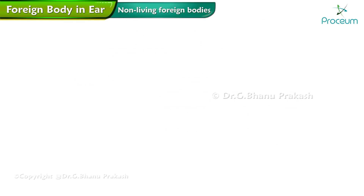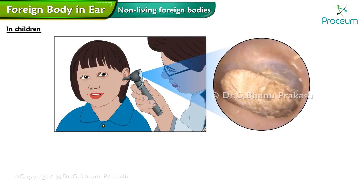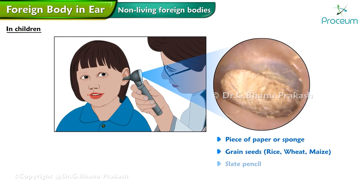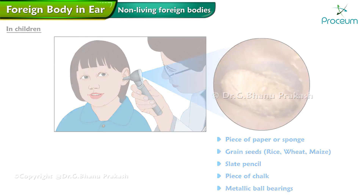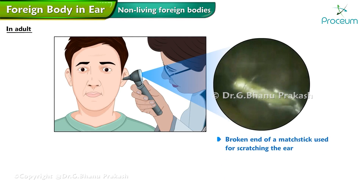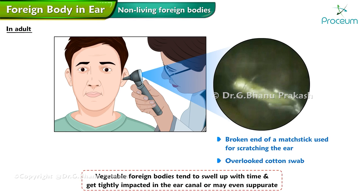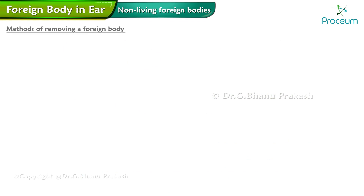The common non-living foreign bodies seen in children are pieces of paper or sponge, grain seeds like rice, wheat, maize, slate pencil, piece of chalk, or metallic ball bearings. An adult may present with a broken end of a matchstick used for scratching the ear or an overlooked cotton swab. Vegetable foreign bodies tend to swell up with time and get tightly impacted in the ear canal, or may even separate.